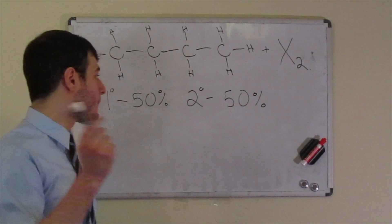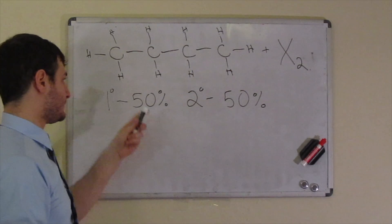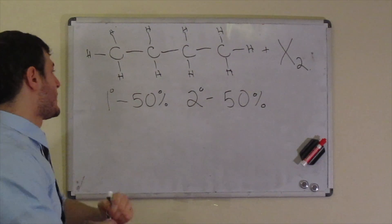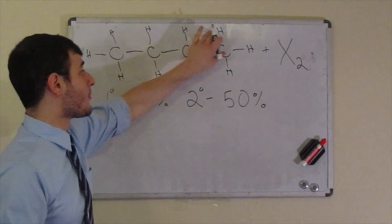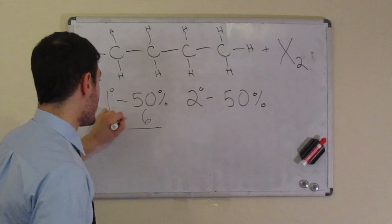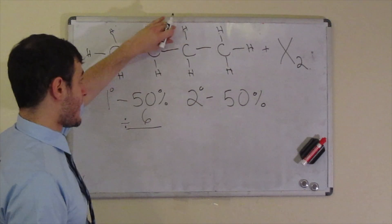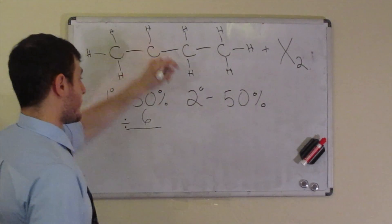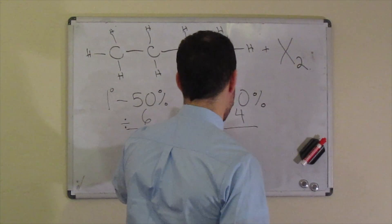Alright, so let's do this problem. The first thing I want to do is count how many different primary hydrogens there are that we're working with. So if you just count one, two, three, four, five, six, there's six primary hydrogens. We're going to use this to find out the percentage that each individual hydrogen reacts. And then for the secondary, if you just count, there's one, two, three, four. So we do a similar calculation for our secondary hydrogens.